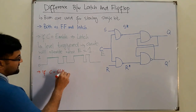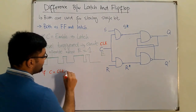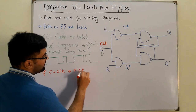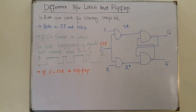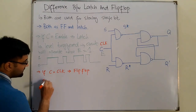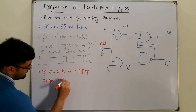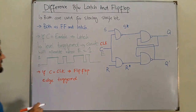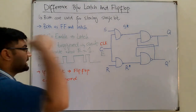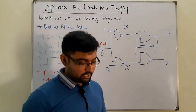When this control signal is equal to the clock signal, the circuit will work as a flip-flop. A flip-flop is an edge-triggered device — it works on edge triggering, meaning whenever the clock goes from high to low, or from low to high. This SR flip-flop we will see in great detail in the very next video.